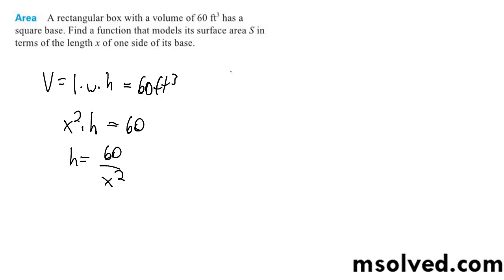Alright, so surface area is going to be well we have two sides of x times x and then we've got the one side of the height, which is going to be actually there's four sides with the height, so it's four times and then our height 60 divided by x squared times x because that's the length of one of the sides of the base.